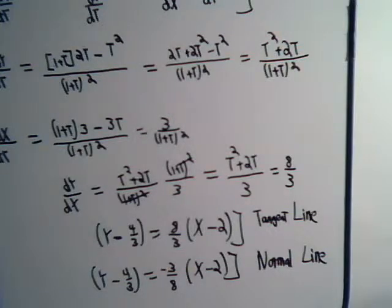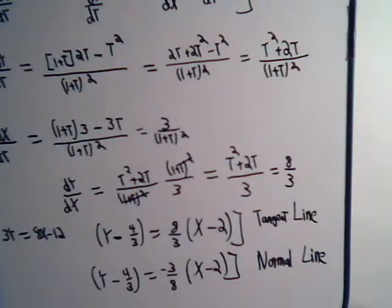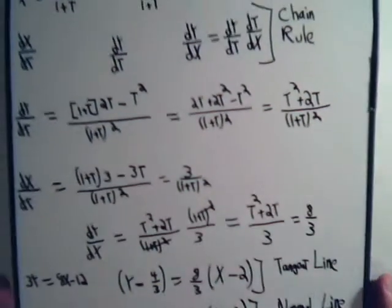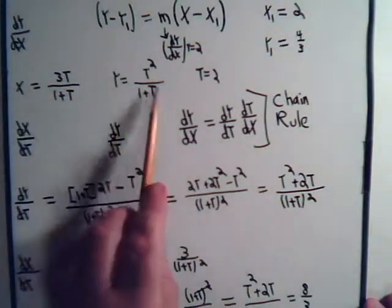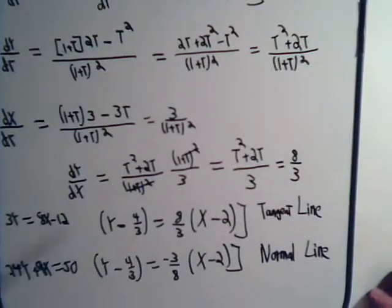We could do some algebra here, and you'll see we get something like 3y equals 8x minus 12 with the tangent line. And the normal line is a little more complicated, it's something like 4y plus 9x equals 50. So for the curve described by this set of parametric equations here, when t equals 2, a tangent line to that curve would have this formula, and a line perpendicular to that curve when t equals 2 would have that formula.